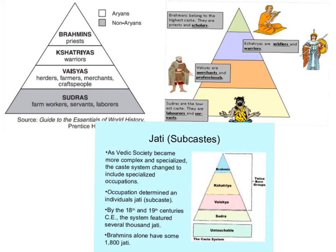Shopkeepers, farmers, traders, barbers, and weavers each belonged to their own group. Since people could not leave their caste, they did the same work as their parents and other members of the group. A weaver's son would be a weaver, and a barber's daughter would marry a barber.